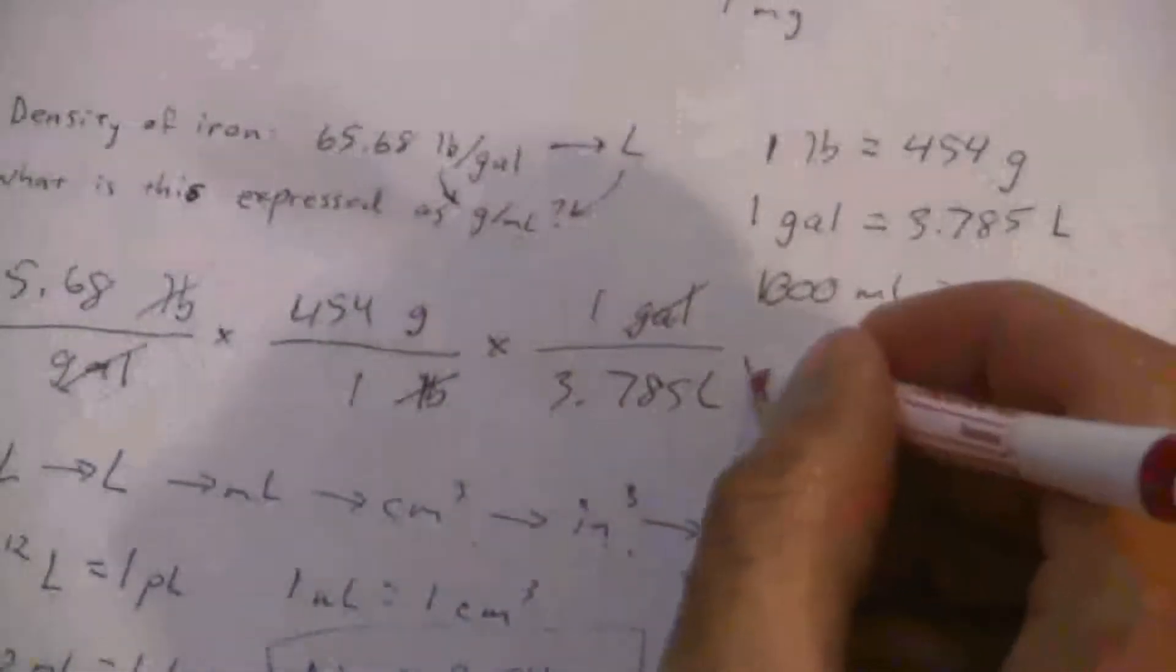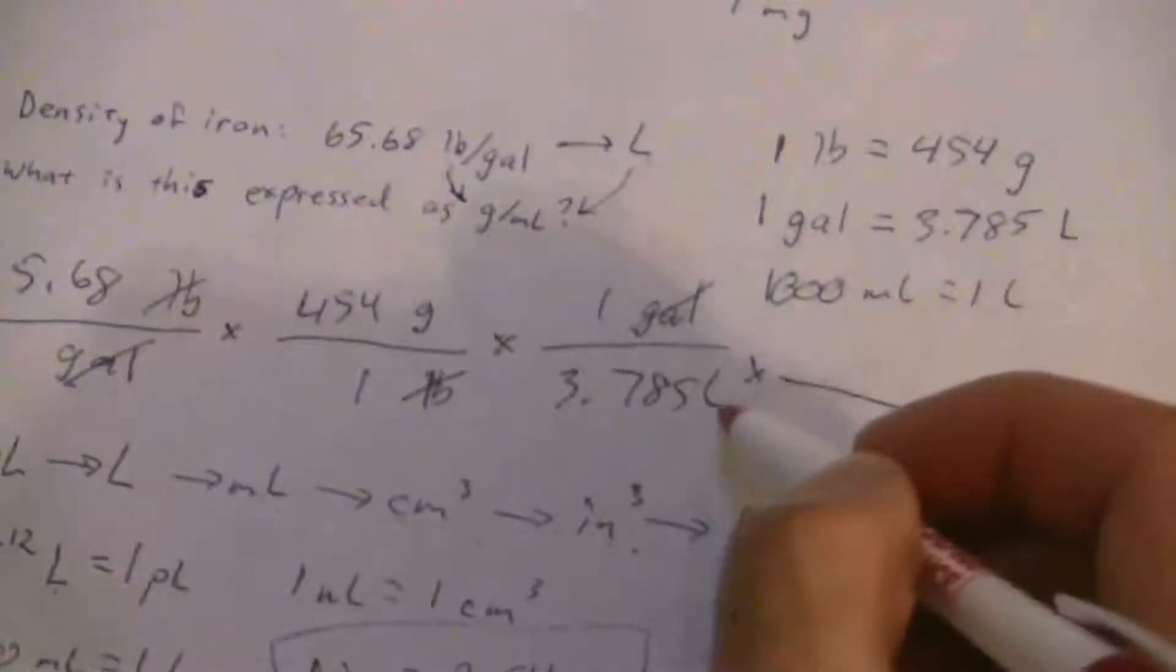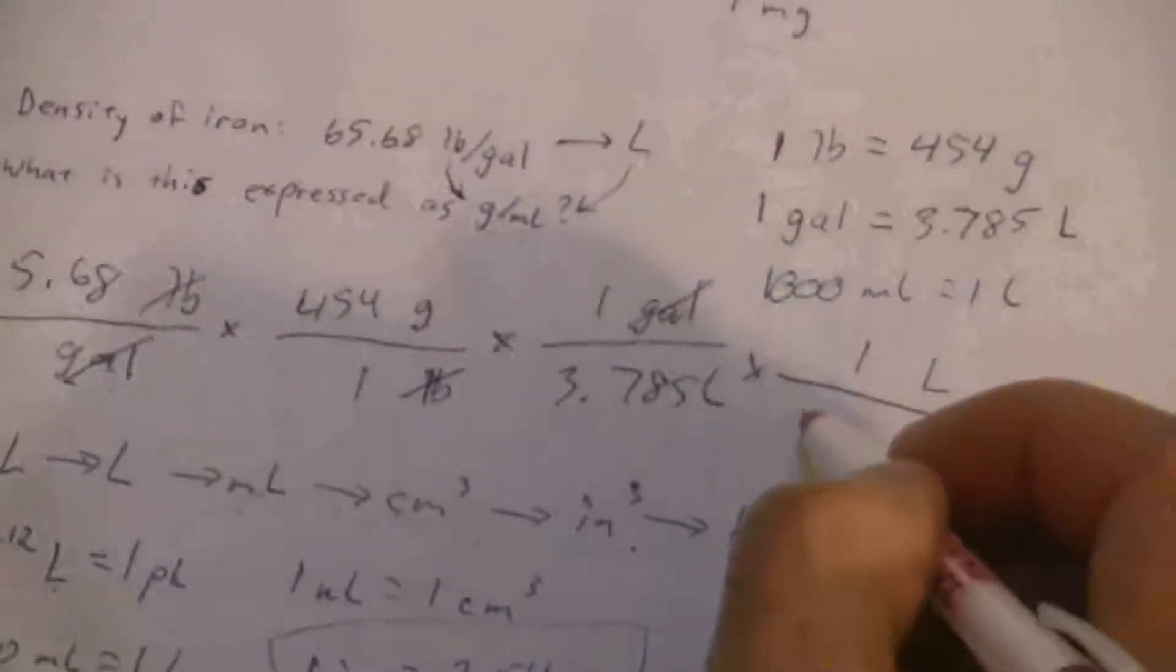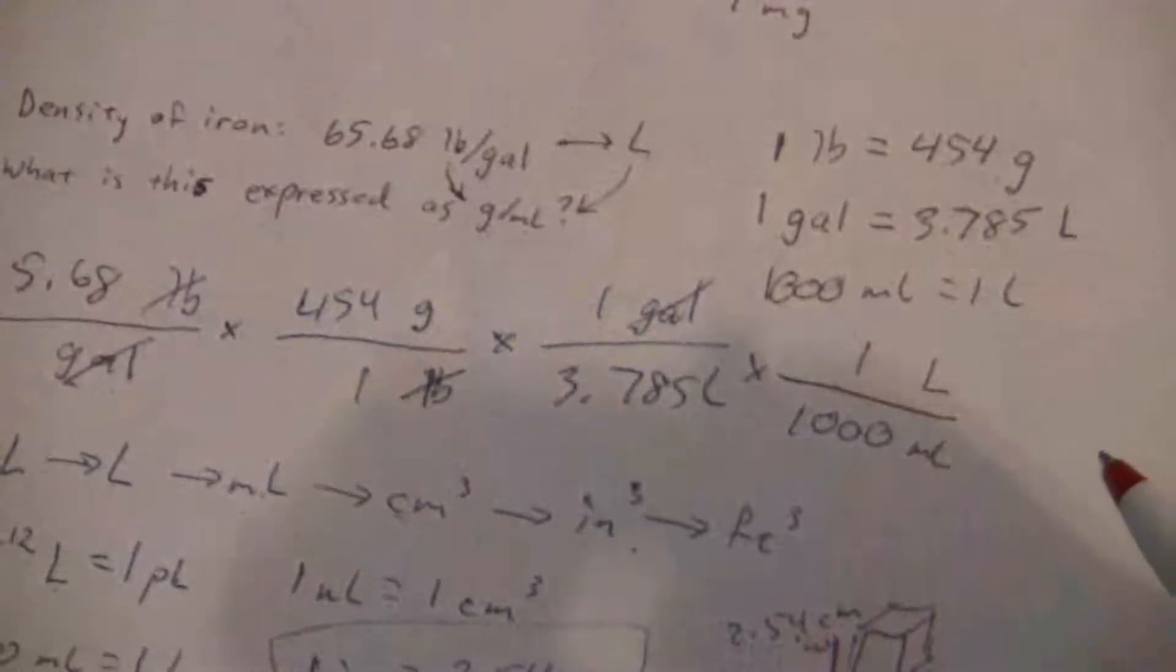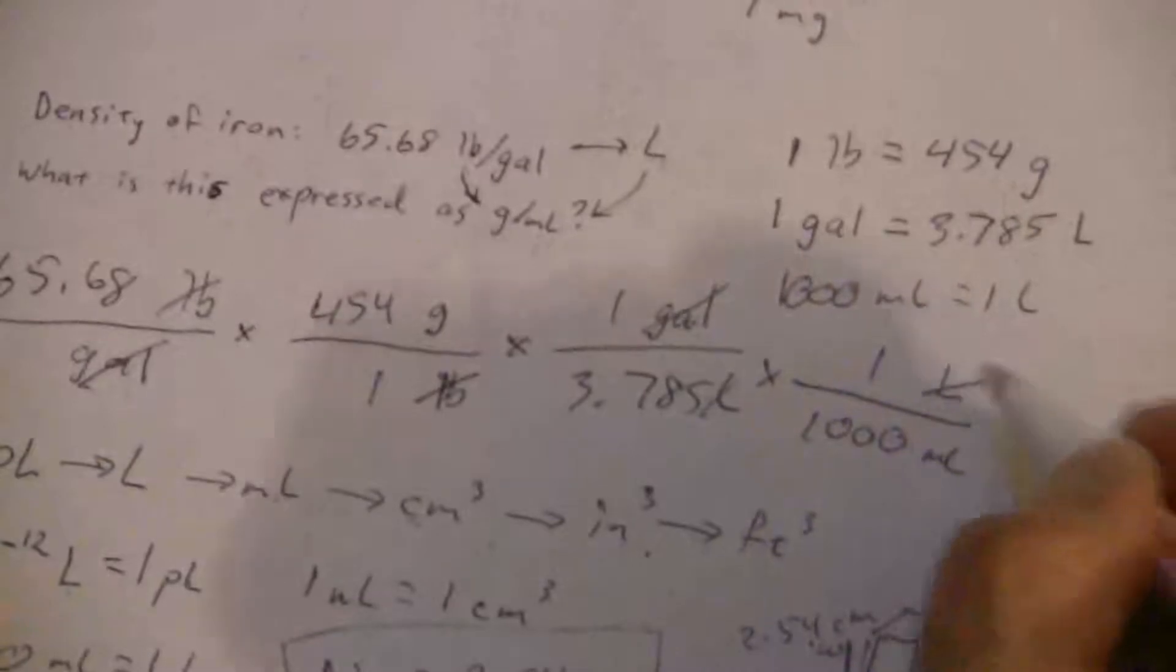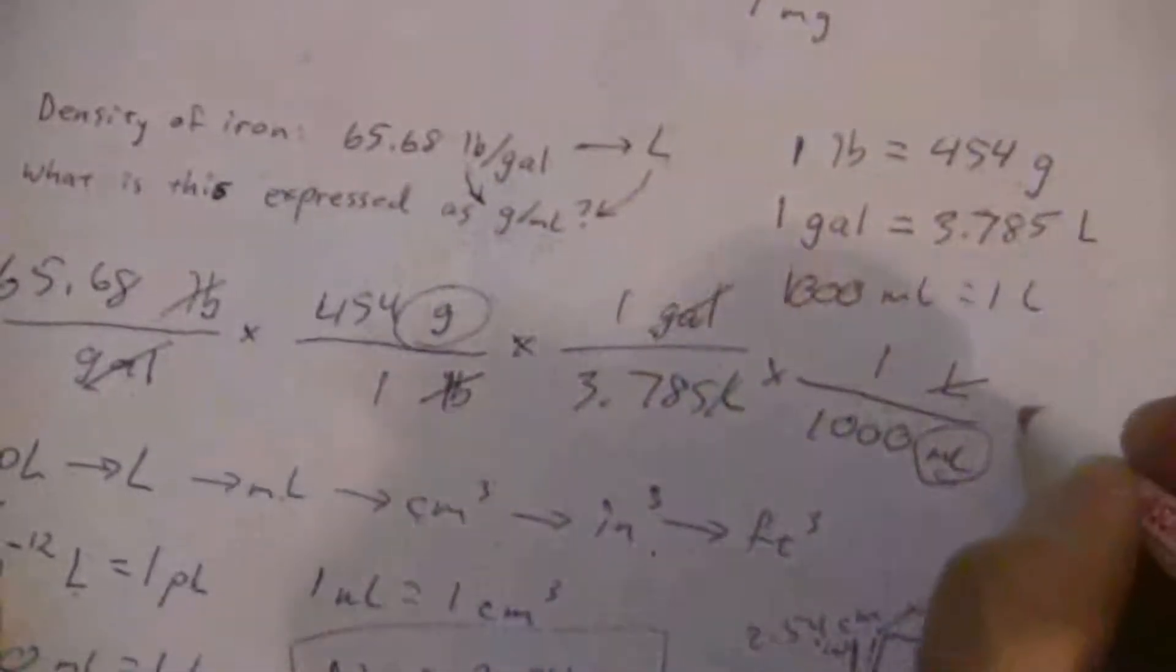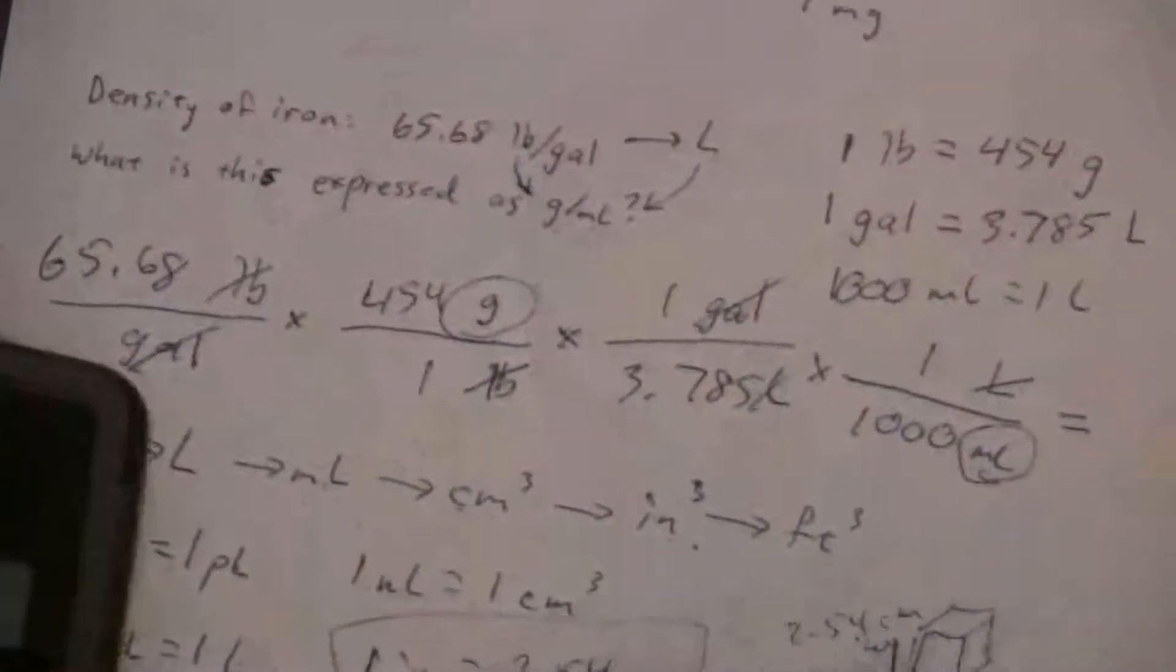So just one last step to convert that into milliliters. On the bottom I have liters down there, so I need liters up here. One liter is a thousand milliliters. And so now my liters will cancel and at this point when I do the calculation I'll have grams per milliliter and that's what I want.